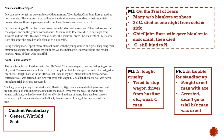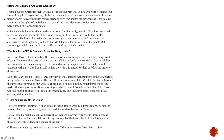The long, painful journey to the west ended March 26, 1839. Four thousand silent graves reached from the foothills of the Smoky Mountains to the Indian Territory in the west. 'The white race wanted their land, so the Cherokees had to suffer.' For hundreds of years there had been rumors about a rich gold mine somewhere in the Smoky Mountains, and he thought the rumors might be true. 'Indian Territory' is new concept vocabulary — that's what he calls the place where they were forced to move, west of the Mississippi.